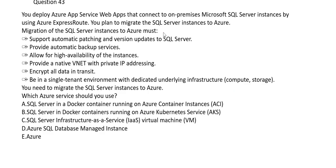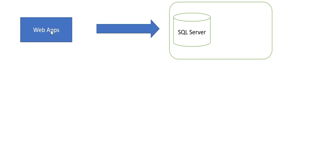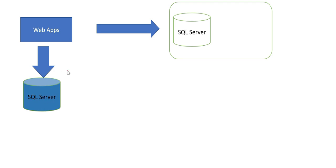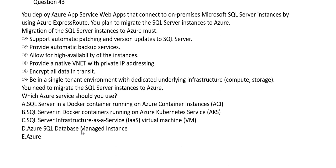Let's look at this question. We need to identify the keywords. You have a web application on Azure, and a SQL Server which is on-premises. The question says you want to move this SQL Server into Azure so that the web app can use SQL Server in Azure. Let's identify the important keywords for decision making.